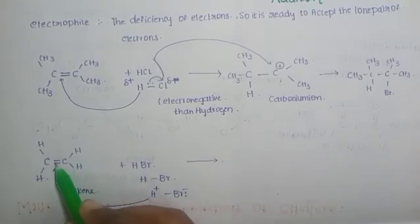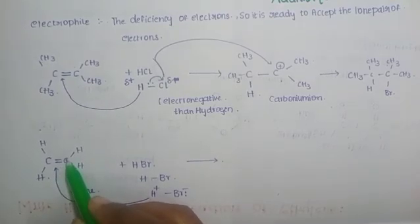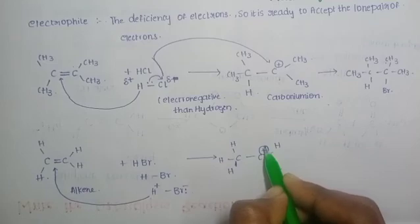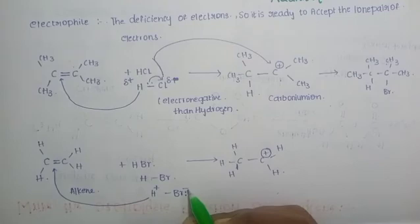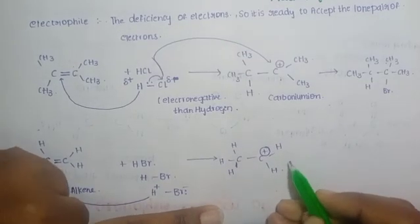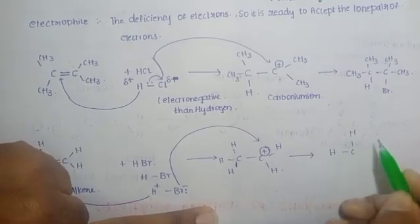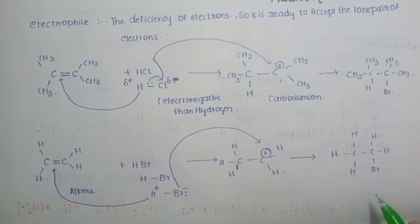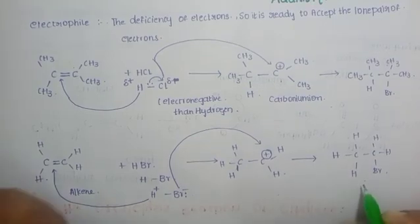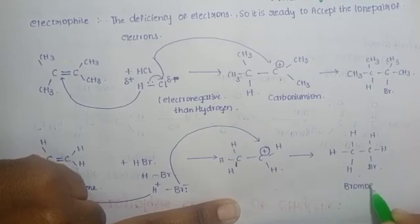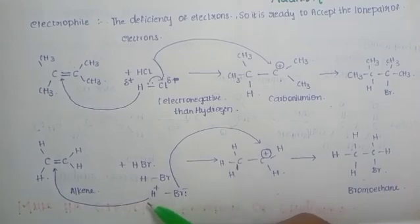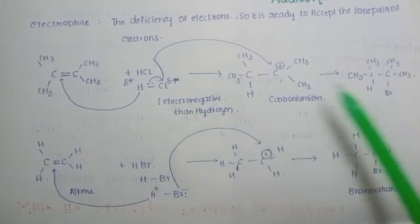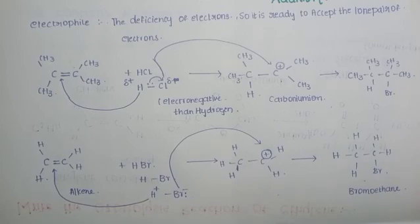When hydrogen attaches to the double bond, there is electron deficiency on that carbon, forming a carbocation — same as the previous step. The electron-rich bromine ion then stabilizes this carbocation, completing the reaction and forming the product: bromoethane. The unsaturated carbon is completely converted into a saturated one — the double bond is converted into a single bond. Same mechanism applies to the first step as well. Thanks for watching, please subscribe to my channel Love Pharmacy.